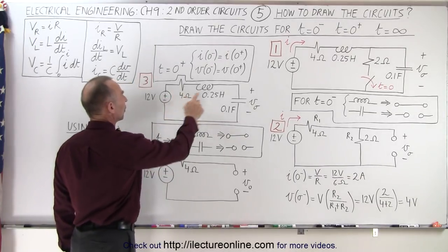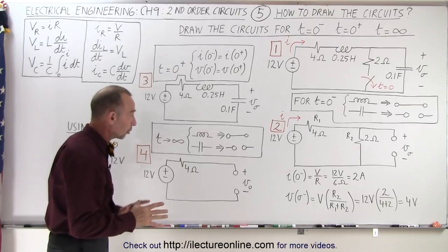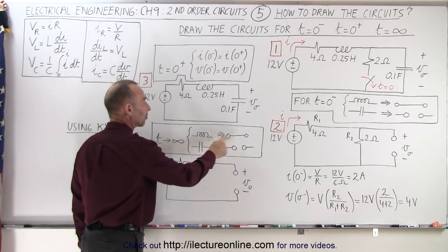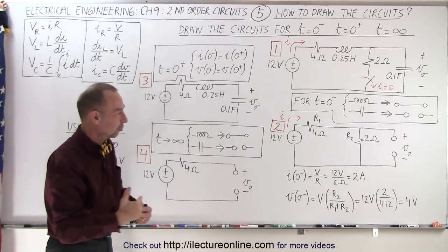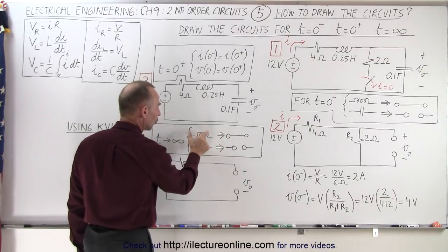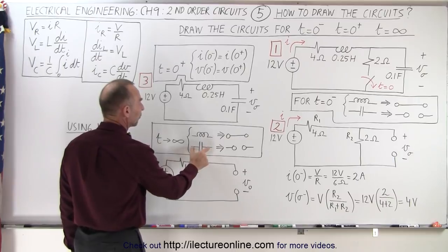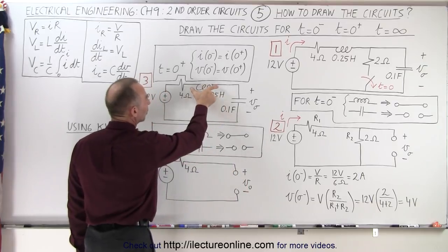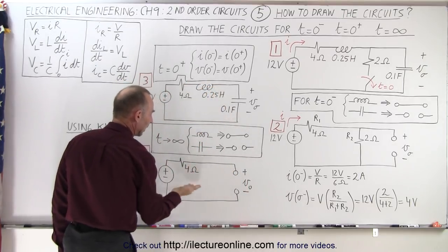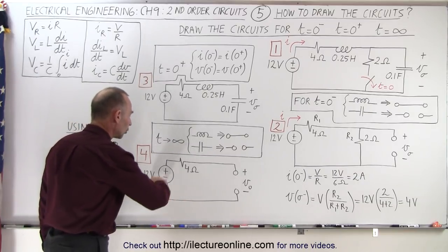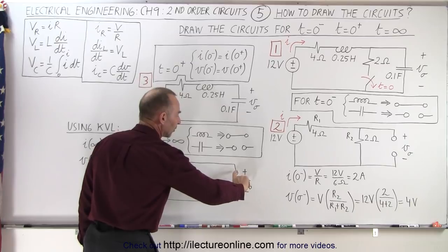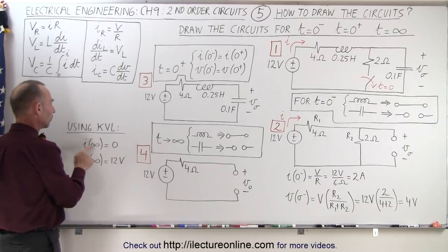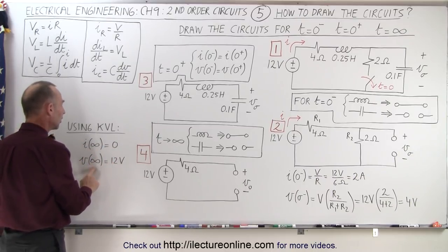The third circuit is drawn for when time approaches infinity. At that point, the inductor again acts like a short — there's no longer a change in current, so it offers no opposition and there's no voltage drop across it. The capacitor is now full of charge and acts like an open. With the capacitor open and the inductor shorted, there is no longer any current flowing, and using KVL the current at the very end is zero and the voltage across the capacitor equals 12 volts.